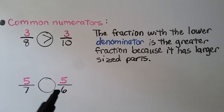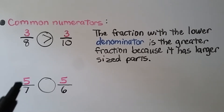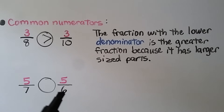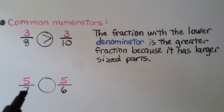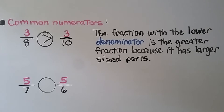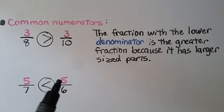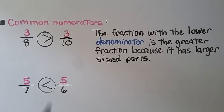Here we have five-sevenths and five-sixths. They have the same numerator — a common numerator of five. We look at the denominators: six is lower than seven, so those parts are larger. That means five-sevenths is less than five-sixths. Five-sevenths has smaller parts and five of them, while five-sixths has larger parts and five of them, so five-sixths is the greater fraction.